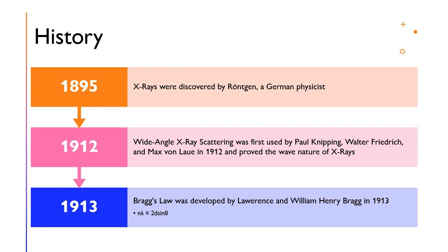X-rays were first discovered by a German physicist named Wilhelm Röntgen in 1895. Although the nature of X-rays were not fully understood, they were immediately and widely used in medical and industrial fields. In 1912, X-ray diffraction and therefore wide-angle X-ray scattering was discovered by Paul Knipping, Walter Friedrich, and Max von Laue. This discovery proved the wave nature of X-rays and provided a new method of investigating the fine structure of matter, leading to the development of Bragg's Law by Lawrence and William Henry Bragg in 1913.